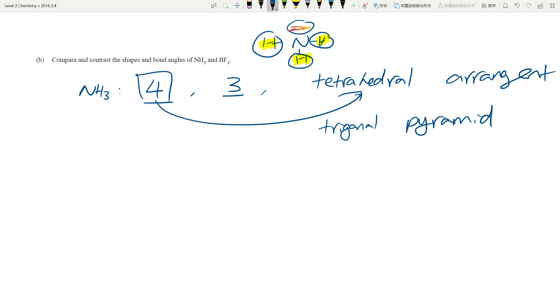So this means you will have a tetrahedral arrangement. Because as long as you have four regions of density, you always have a tetrahedral arrangement. But because one of them is a lone pair of electrons, which you can't see, you will have a trigonal pyramid shape. Because you can't see the four corners. You can only see three corners. That's why it's trigonal pyramid. And the bond angle is 109.5 degrees. As long as you have four regions of electron density, the bond angle is always going to be 109.5 degrees because you have the tetrahedral arrangement.